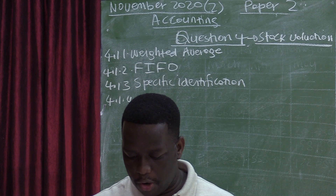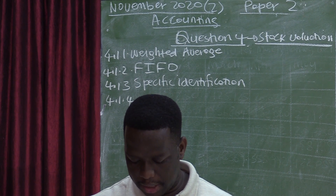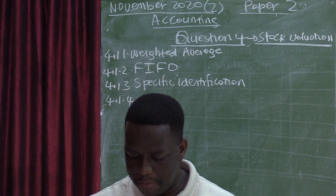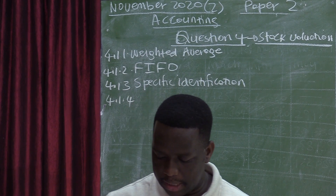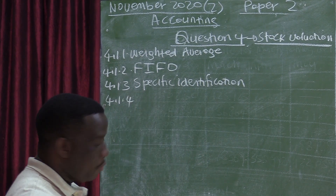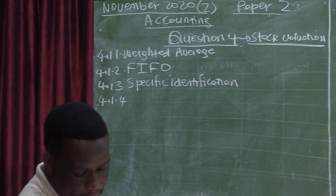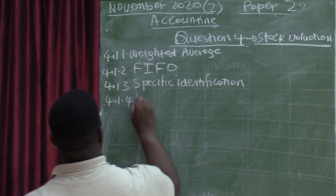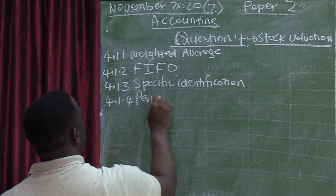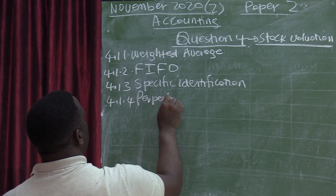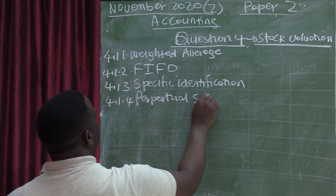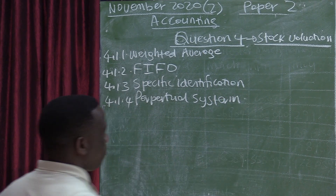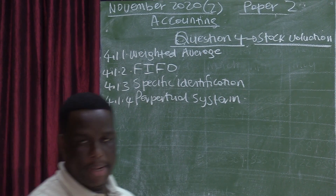4.1.4: the cost of sales is recorded for every sales transaction. We are looking at the perpetual system. This question is worth 4 marks.